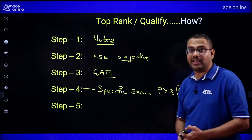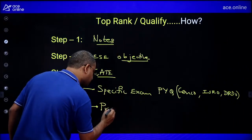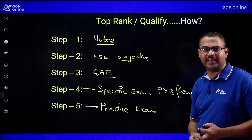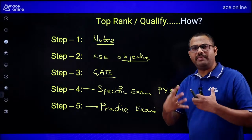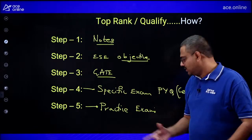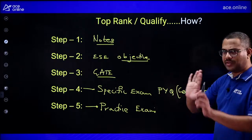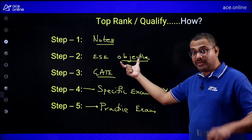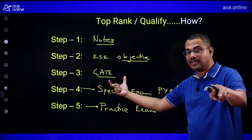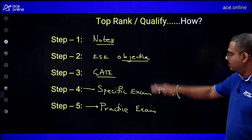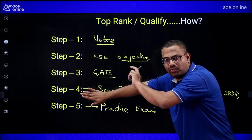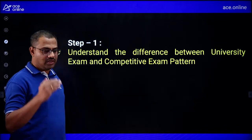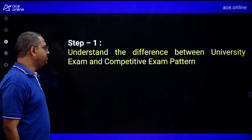Summary of the five-step strategy: Notes of teacher (experience-based) → ESE objective bits without calculator (speed and accuracy) → GATE previous year questions (depth in mathematics) → Specific exam papers when notification arrives → Practice mock exams. These steps work for any engineering competitive exam. Understand the difference: university exams qualify students; competitive exams eliminate the weakest. The definition — competitive exams may not select the best but definitely eliminate the worst.